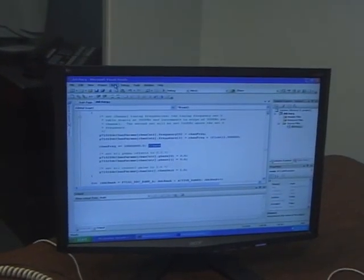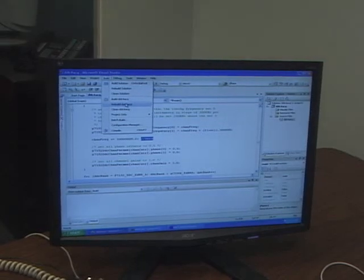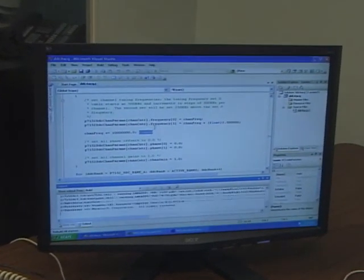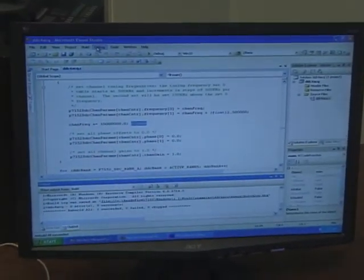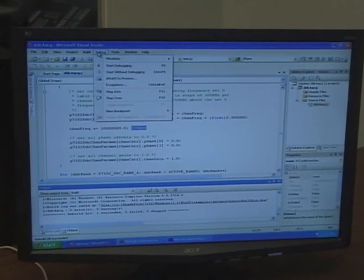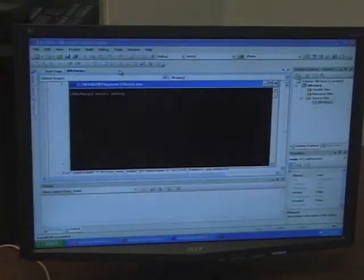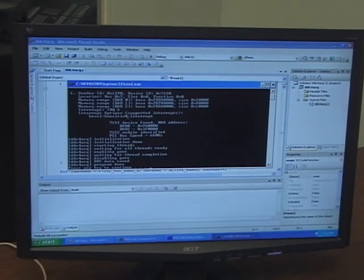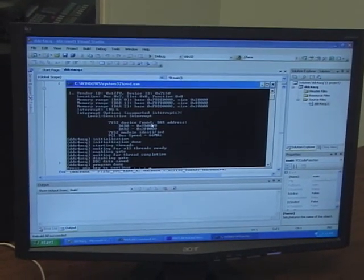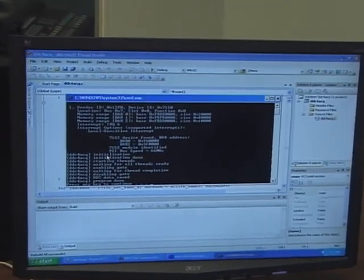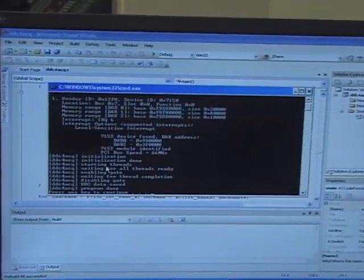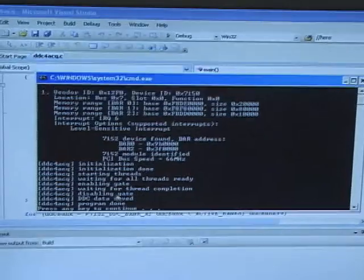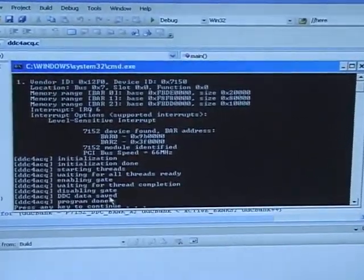First, we can rebuild the application. And then we will execute from within Microsoft Visual Studio. And what we see is that the board is discovered by the application. It's initialized. The threads associated with the DMA transfer are started. And the data is saved to a file.